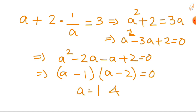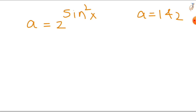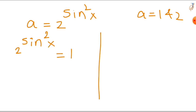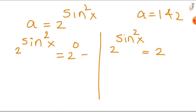So a equals 1 and a equals 2. We can set up the following equations. For a equals 1: 2 raised to the power of sin²x equals 1. Since 1 can be written as 2 to the power of 0, and when bases are the same we equate the powers, we get sin²x equals 0.